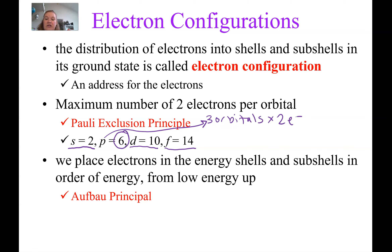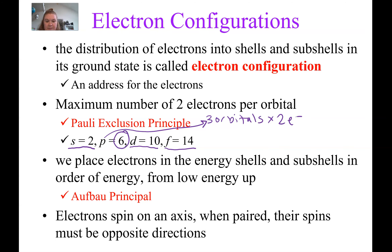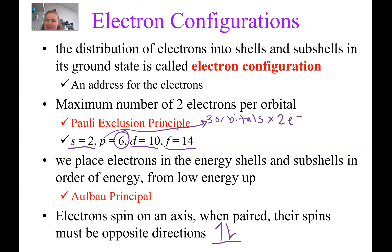Electrons spin on an axis — just like the Earth spins. When we pair them up in an orbital, they have to spin in opposite directions: one clockwise and one counterclockwise. We represent this by drawing two arrows. One electron is labeled spin up and the other is spin down. This isn't really indicating a specific spinning direction — it's just saying they're spinning in opposite directions.